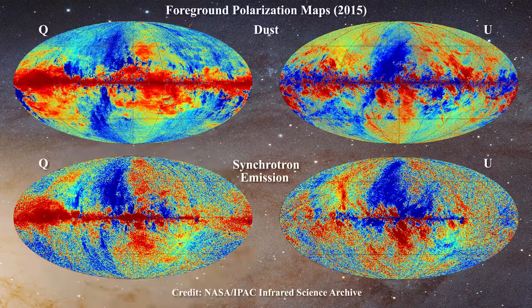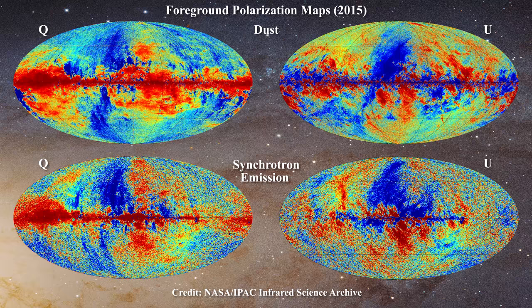Hello everyone and welcome to SkyScholar. In the last video we discussed foreground analysis and learned about the polarization maps for the first time. The Planck team claimed that they can fully characterize the foreground in terms of polarized components, associating foreground polarization with synchrotron radiation at low frequency and thermal dust at high frequency. In so doing they presented four maps in 2015 as we saw in the last video.